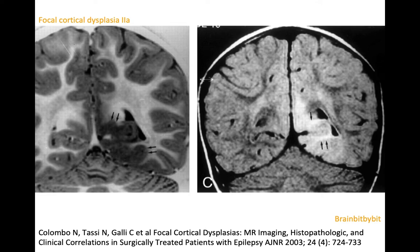The size of the FCD can vary from very small and subtle to very large, as you see on the FLAIR and coronal inversion recovery-weighted images of this patient in the left occipital lobe.